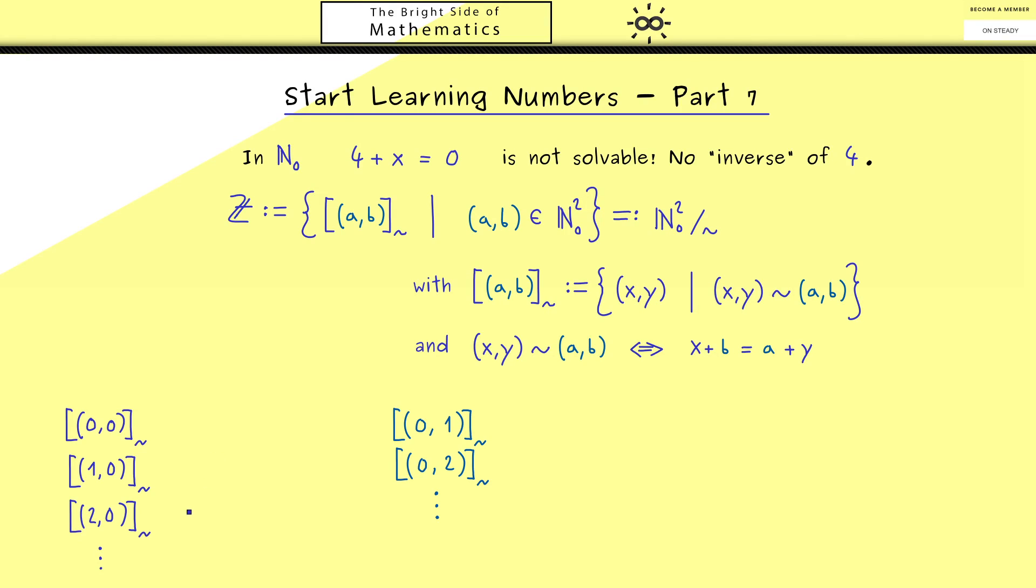So it might be useful to introduce new shorter names for all these elements. The first one is the jump with value 0, so let's just call it 0. However, to distinguish it from the original 0 in N₀, let's introduce an index ℤ here. Similarly, the jump with value 1 we just call 1 with index ℤ.